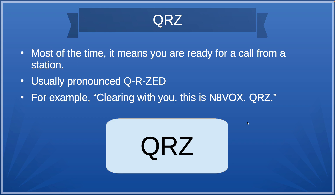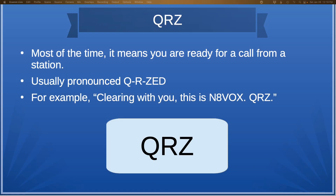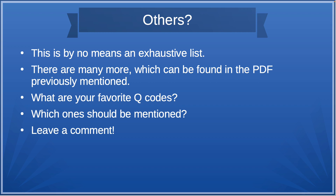And finally, QRZ. Most of the time it means you're ready for a call from another station. When you hear QRZ, it means hey, I'm ready for the next one. For example, during a Parks on the Air activation, the operator might say, "Clearing with you. This is N8VOX, QRZ" — and then comes the pileup. It just means I'm done with you and I'm ready for the next call. This is by no means an exhaustive list; there are a whole lot more Q codes in that PDF mentioned earlier.